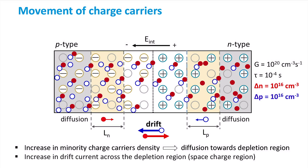Due to an enormous increase in the concentration of minority charge carriers, the drift current across the depletion region will increase. Electrons will be pushed from the P-type region to the N-type region and holes the other way around, from the N-type region to the P-type region.